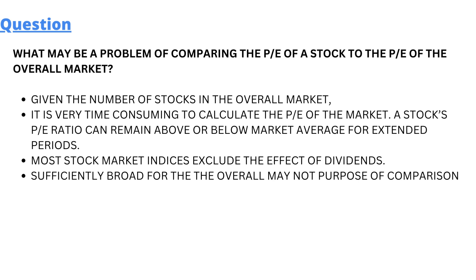Option A: Given the number of stocks in the overall market, it is very time consuming to calculate the PE of the market. Option B: A stock's PE can remain above or below the market average for extended periods. Option C: Most stock market indices include the effect of dividends. Option D: The overall market may not be sufficiently broad for the purpose of comparison.